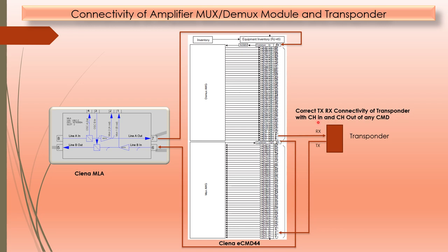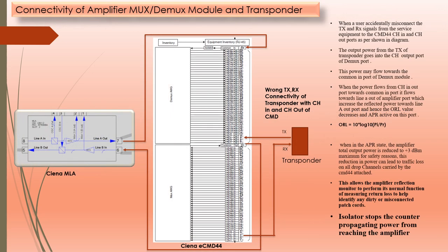The next picture looks similar to the previous one, but if you notice, there is a wrong TX and RX connectivity of the transponder with the channel in and channel out of the CMD44. Here, TX is connected to channel 5 out and RX is connected to channel 5 in — which is the reverse of the correct connectivity shown previously. This wrong TX/RX connectivity is the reason the isolator is used at the common input.